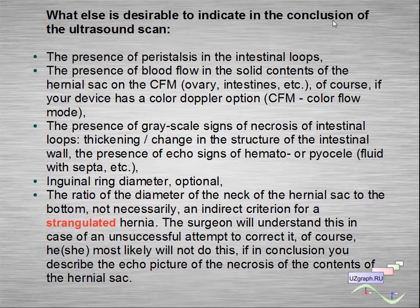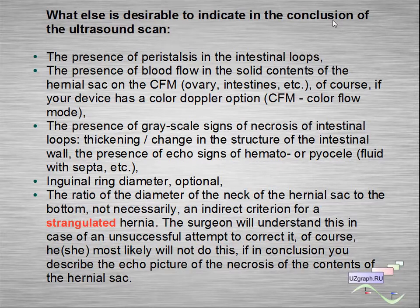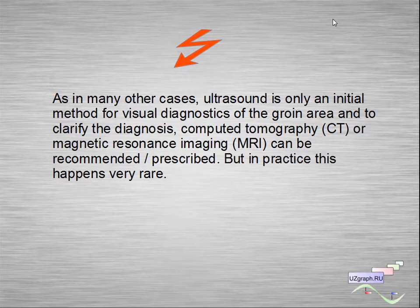Also note the inguinal ring diameter (optional), and the ratio of the diameter of the neck of the hernial sac to the bottom (not necessarily) as an indirect criterion for strangulated hernia — the surgeon will understand this in case of an unsuccessful attempt to correct it. Of course, they most likely will not attempt correction if the ultrasound conclusion describes echo signs of necrosis of the hernial sac content. As in many other cases, ultrasound is only an initial method for visual diagnosis of the groin area; CT or MRI can be recommended to clarify the diagnosis, but in practice this happens very rarely.